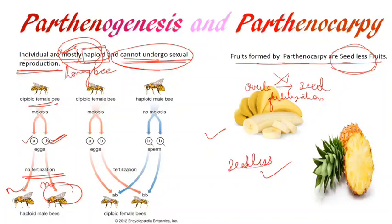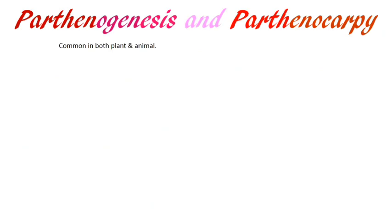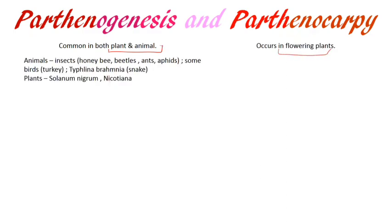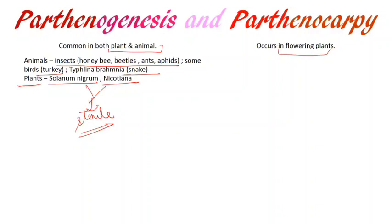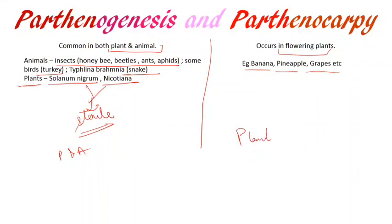The next difference: parthenogenesis is common in both plants and animals, while parthenocarpy occurs only in flowering plants. Examples of parthenogenesis include insects such as honeybee, beetles, ants, aphids, and even turkey and some snakes, as well as plants like Solanum nigrum and Nicotiana — though these two plants formed by parthenogenesis are sterile. Examples of parthenocarpy include banana, pineapple, and grapes.